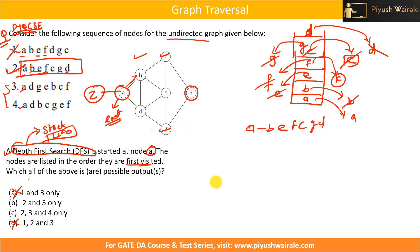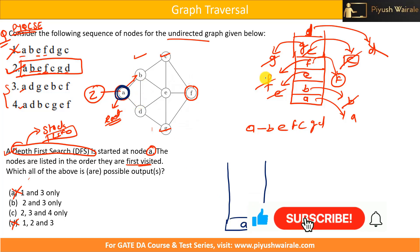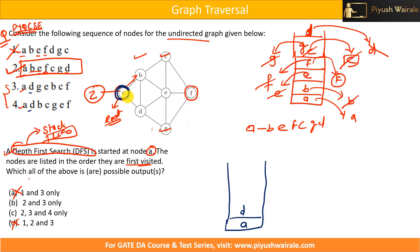Now let's consider options 3 and 4, where from A we go to D instead of B. I add A, then D to the stack. From D, I can go to B, E, and G — A and B's state needs checking. Looking at option 3: A→D→G, so I add G to the stack.